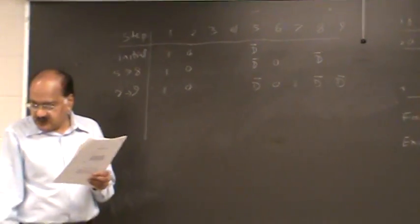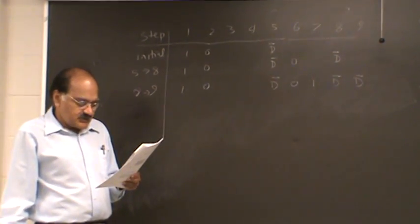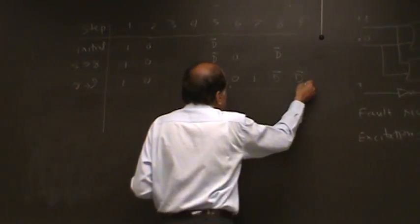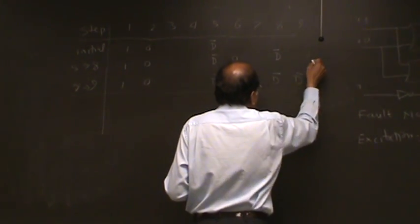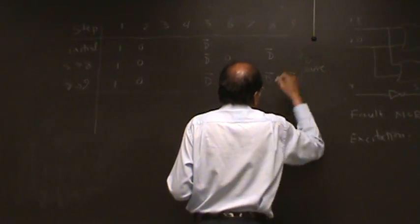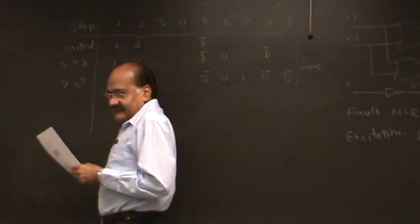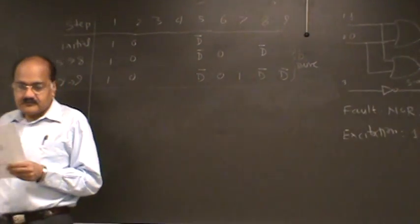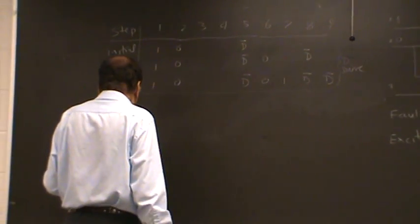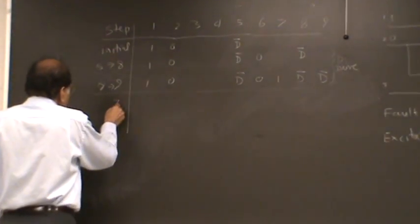So we have reached the output. But of course that is the propagation. We still need to do justification. So this here was the D drive. But we don't know yet if this is going to work.